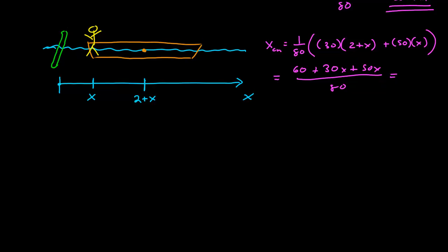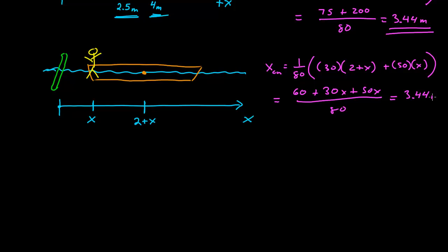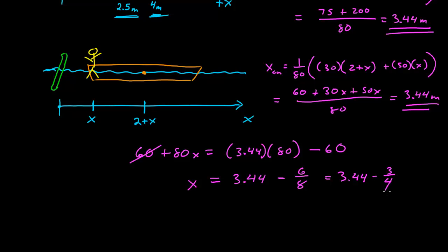We know what the x of the center of mass is. It's 3.44 meters. And because it was at rest and there were no net forces on the person canoe system, that has not changed. So now we have 60 plus 80x is equal to 3.44 times 80. And then we subtract 60 from each side, and so x then divide 80 by each side, 3.44 minus 6 eighths, which is 3.44 minus 3 fourths.